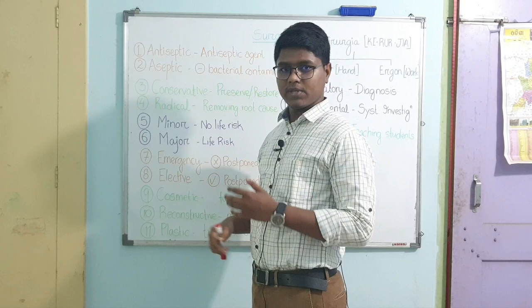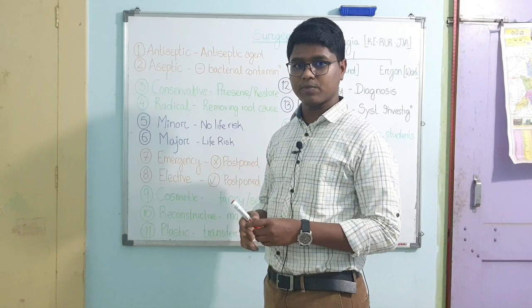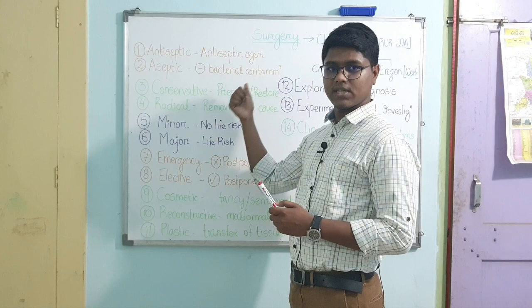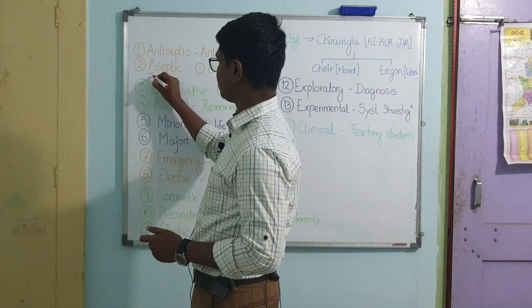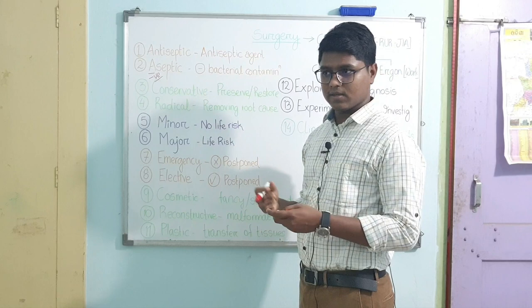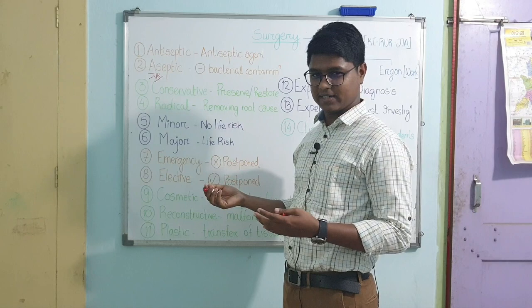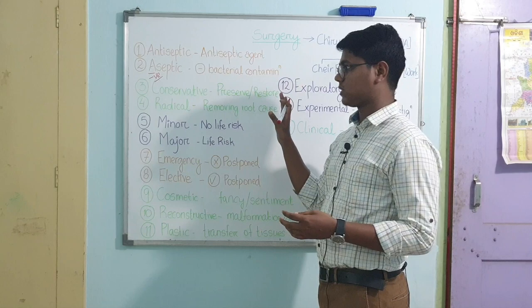First one is antiseptic surgery and aseptic surgery. This concept will be cleared in a subsequent video when I talk about principles of asepsis. For now: antiseptic surgery means surgery conducted using antiseptic agents. Aseptic — any word with 'a' means absence — so aseptic means absence of sepsis. Septic usually refers to bacterial contamination, though it can be multi-organism contamination. Aseptic surgery means you conduct surgery in the absence of bacterial contamination.